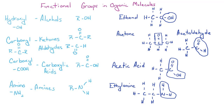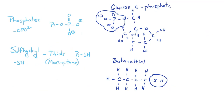Next, we have phosphates. You have a phosphorus, four oxygens, and a double-bonded oxygen. This has a charge of negative two. This is what is called a polyatomic ion. An example of a phosphate would be glucose-6-phosphate. Glucose is a carbohydrate, a sugar. Here you can see the phosphate attached to the sixth carbon right here.